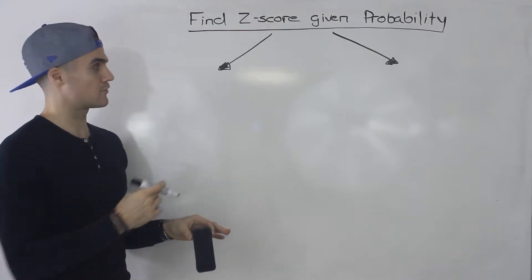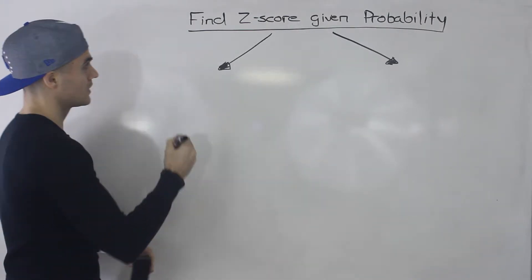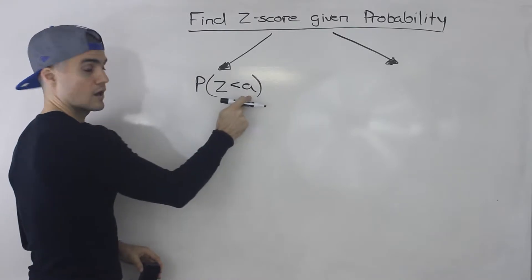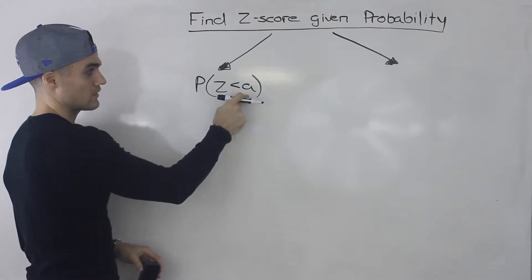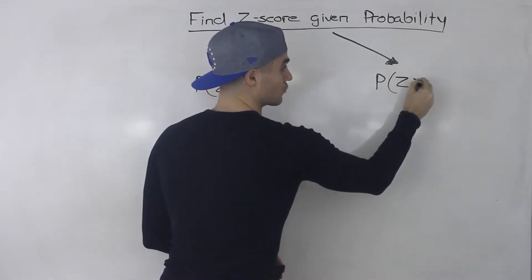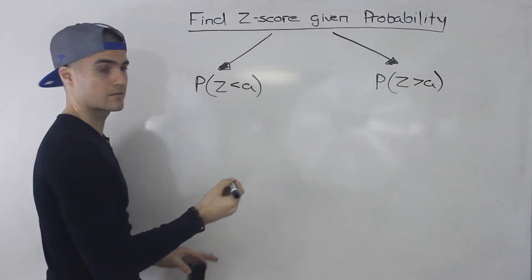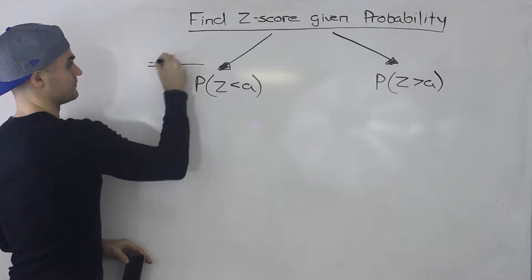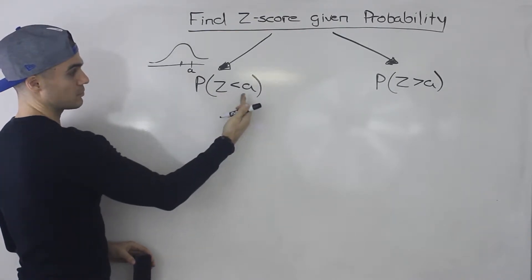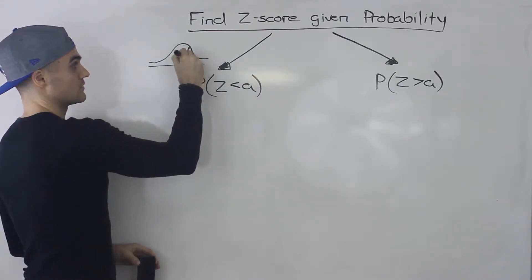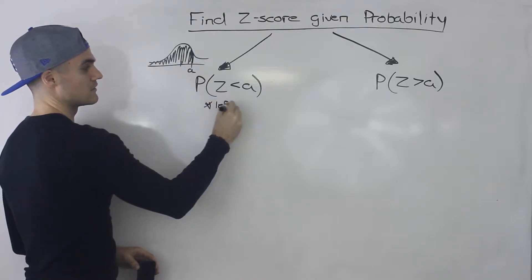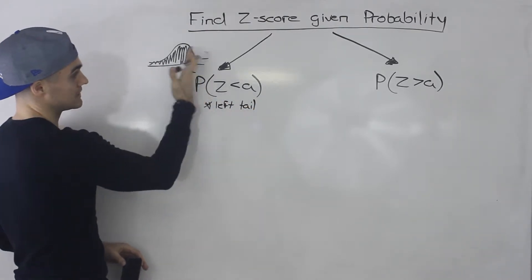We can run into multiple scenarios when finding the Z-score given a probability. We can be given the probability to the left of that Z-score — that A value we're finding — so the probability that Z is less than A. Or we could be given the probability to the right of A, meaning Z is greater than A. If we draw this on a diagram, the first case is like a left-tail scenario where we're given the probability to the left of A.